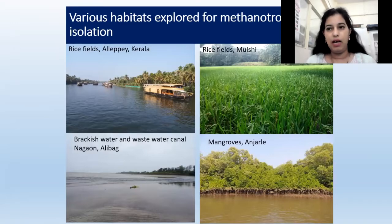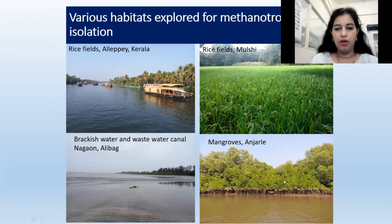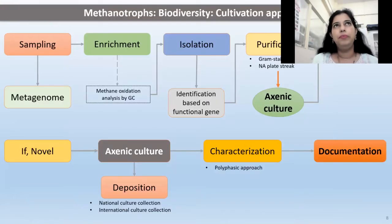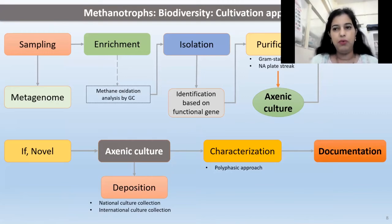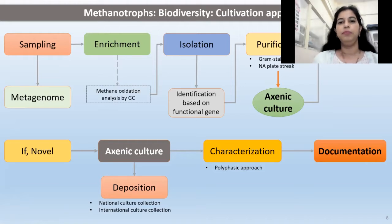We studied various environments in India, mainly focusing on rice fields around Maharashtra. We also focused on some wetlands close to Maharashtra and the Kokan area, and we explored the Kerala region, particularly the Alapi wetland regions for methanotrophic diversity. For cultivation of these interesting bacteria, we developed a strategy where we initially do enrichment, followed by isolation and then purification of the strains. If the cultures are novel, we further use high-throughput sequencing to get the genome of these methanotrophs and describe them as new species or new genera.